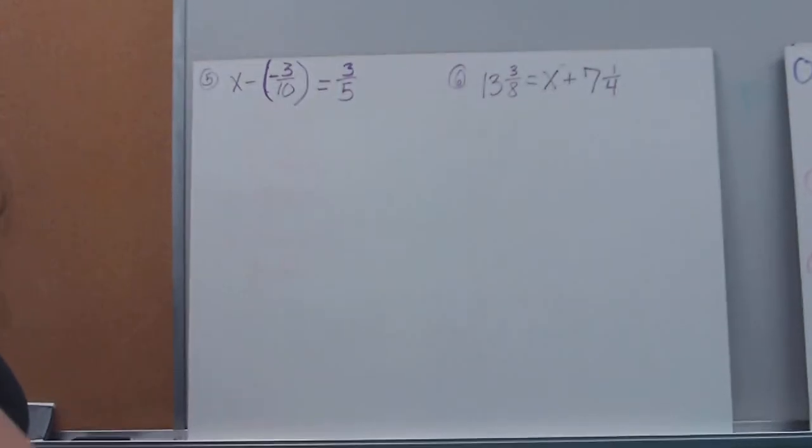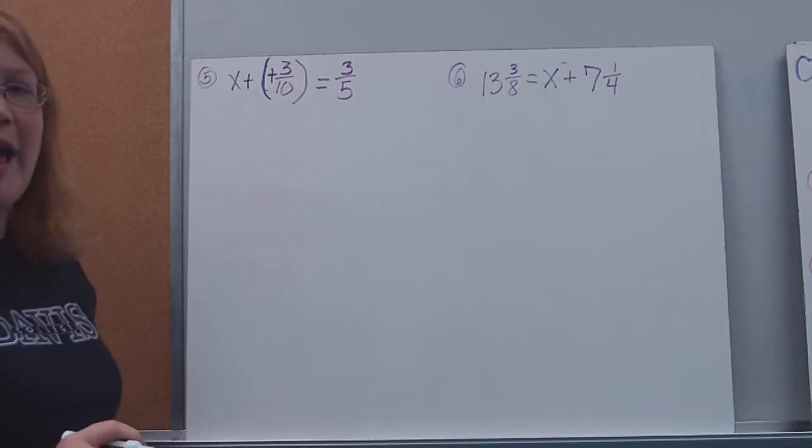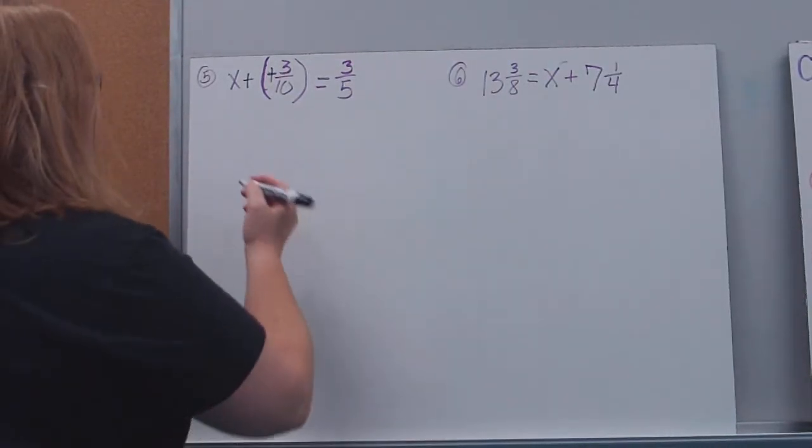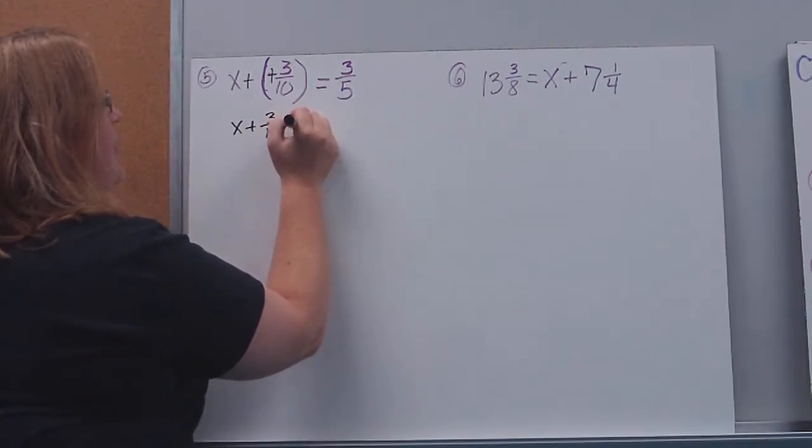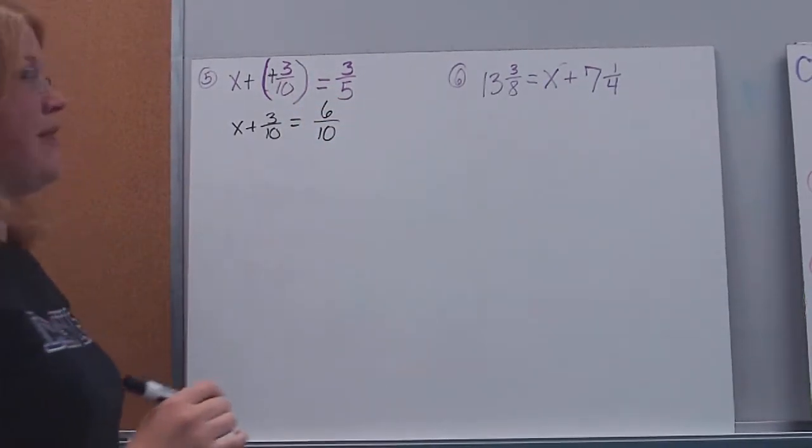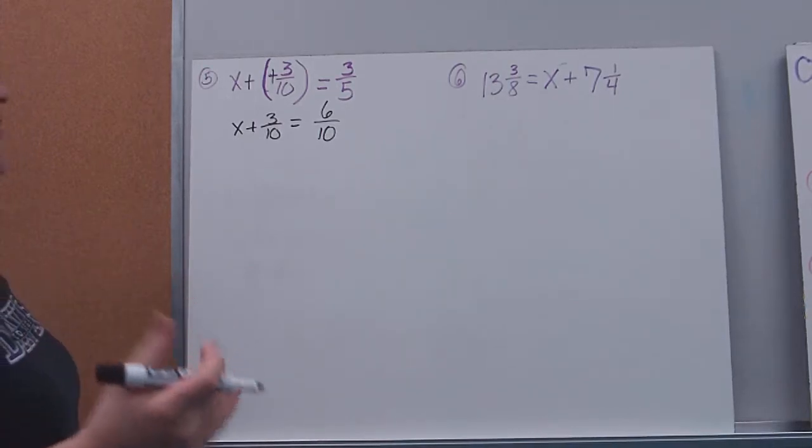All right, just a couple more here to look at. All right, here I have a subtraction equation. You'll notice I'm subtracting a negative. So the first thing I'm going to do, I'm just going to rewrite that by adding the additive inverse. So now I basically just have x plus three-tenths is equal to three-fifths, which I'm going to rewrite as tenths because I want to have a common denominator, so six-tenths. All right, so all we want to do is rewrite our common denominators just to make it easier on ourselves.